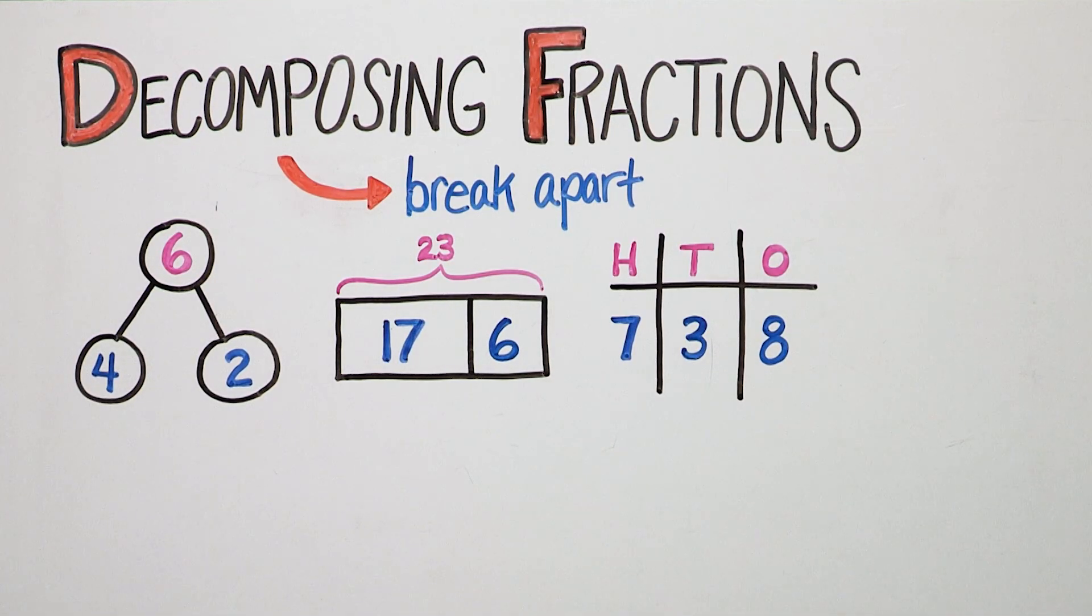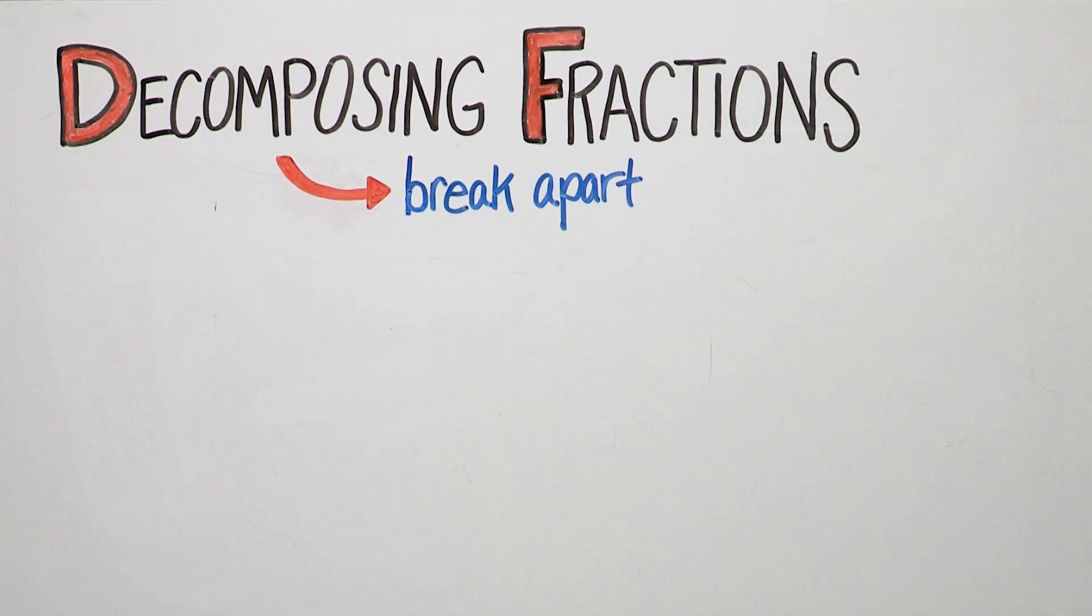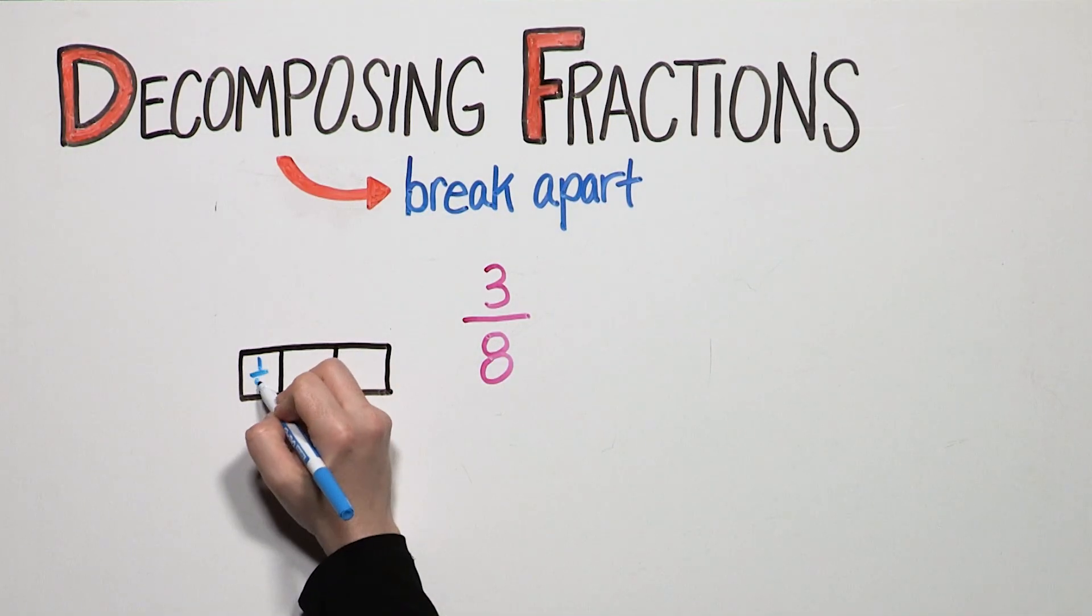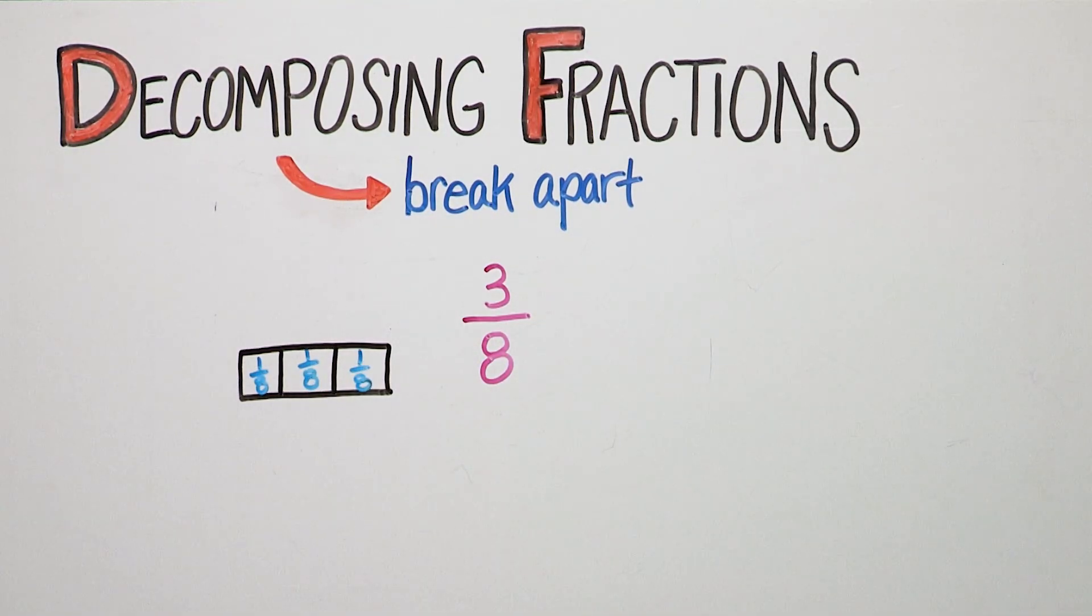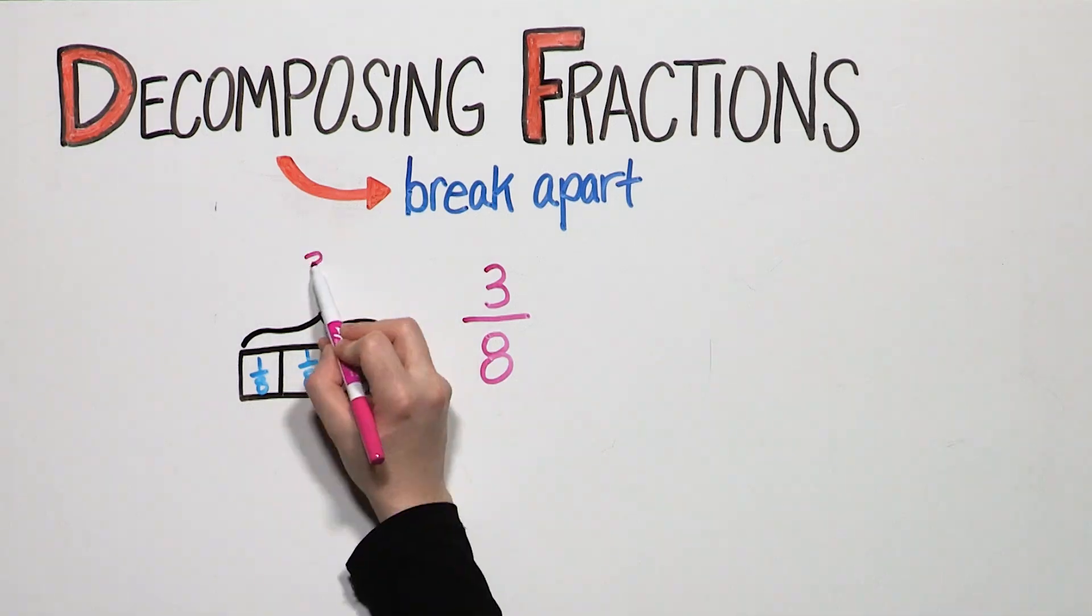In fourth grade, he will decompose fractions. Three eighths is a fraction. We can decompose three eighths into parts using a tape diagram as the visual model. One eighth plus one eighth plus one eighth equals three eighths.